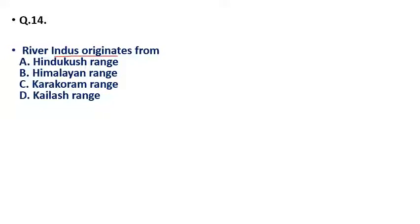Question 14: River Indus originates from — (a) Hindukush Range, (b) Himalayan Range, (c) Karakoram Range, (d) Kailash Range? This question is given as homework — please comment your answer below.